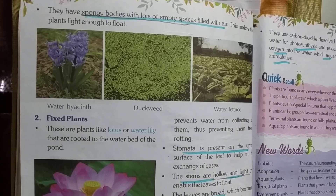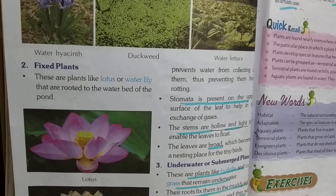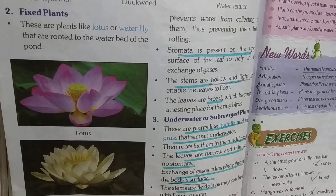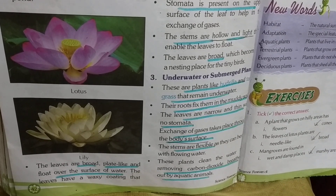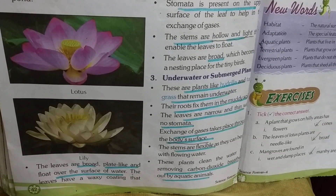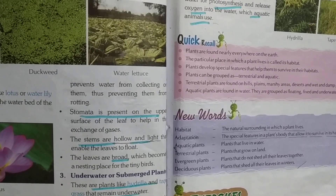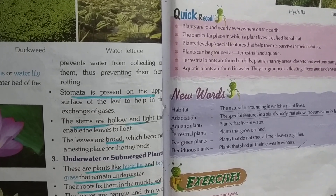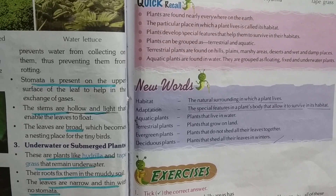Number 2: Fixed plants. These are plants like lotus or water lily that are rooted to the water bed of the pond. The leaves are broad, plate-like, and float over the surface of water. The leaves have a waxy coating that prevents water from collecting on them, thus preventing them from rotting. Stomata is present on the upper surface of the leaf to help in the exchange of gases.